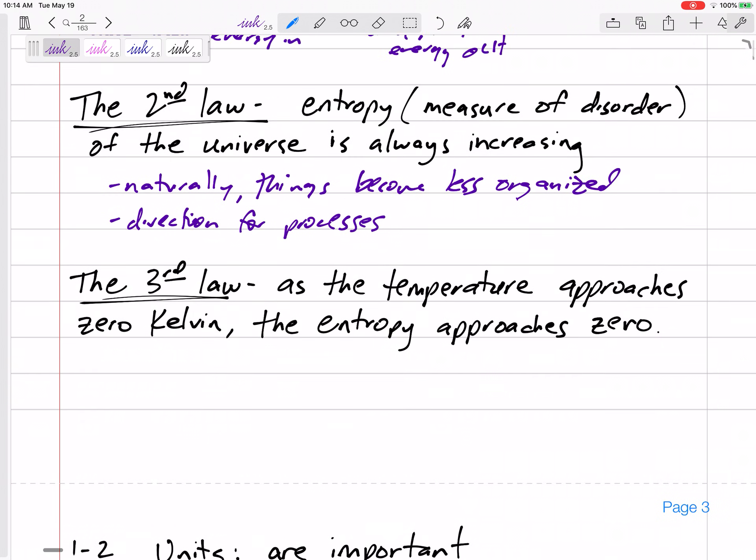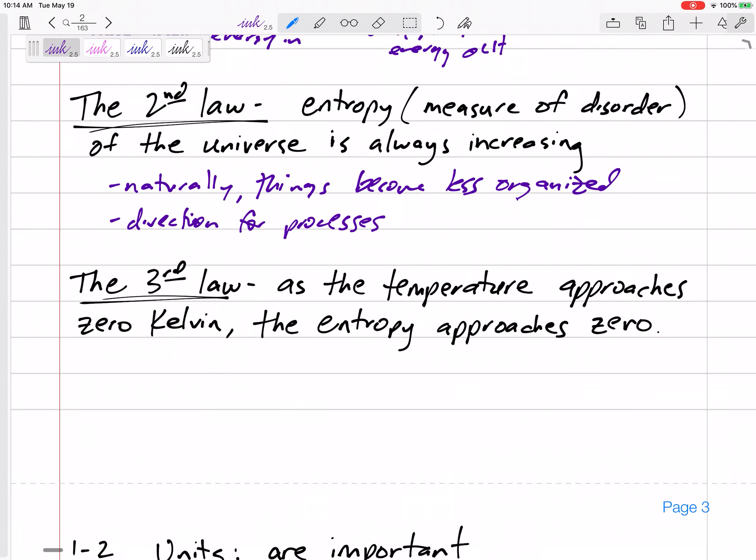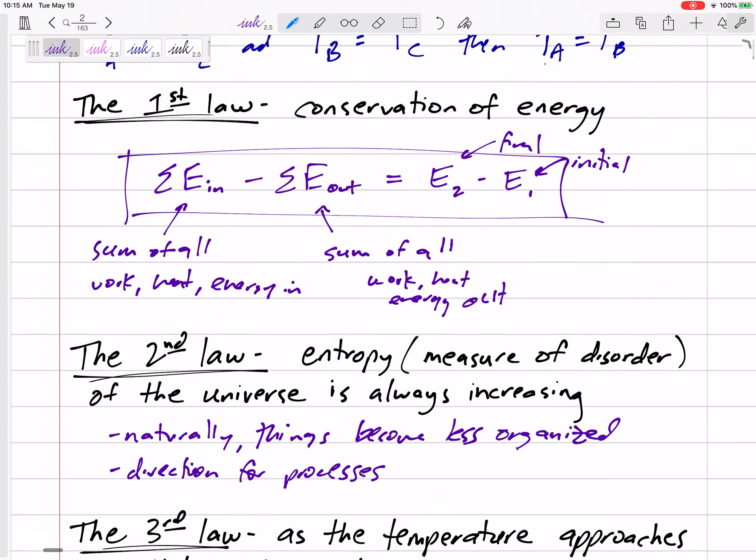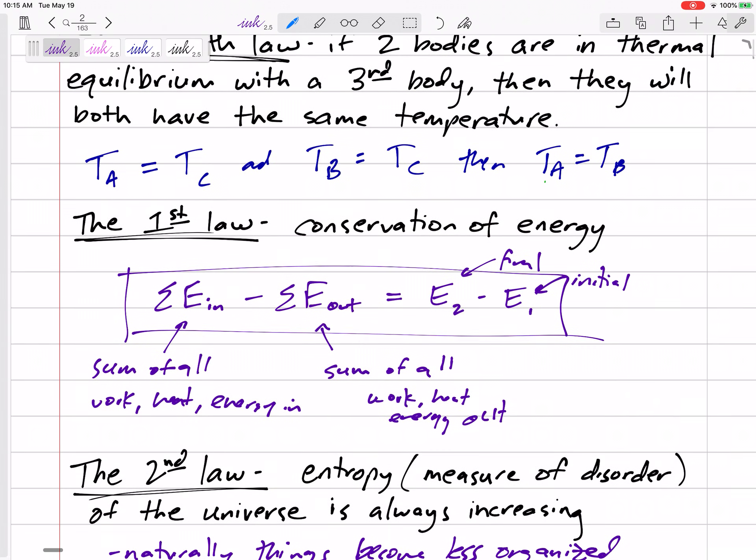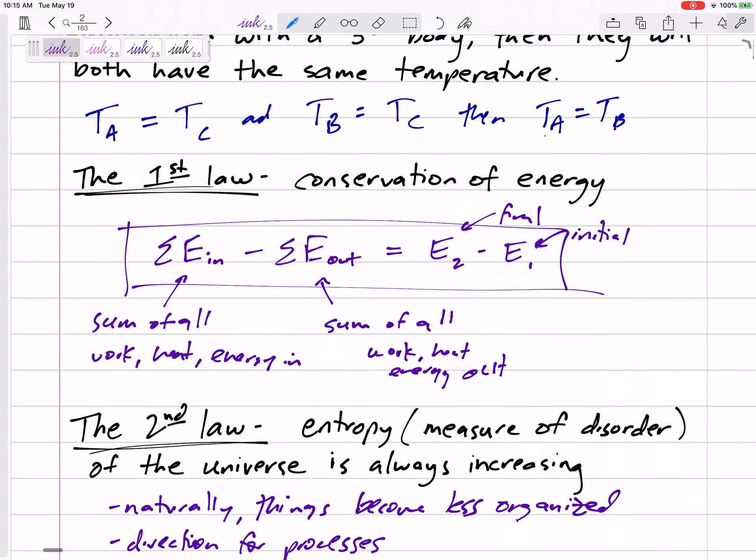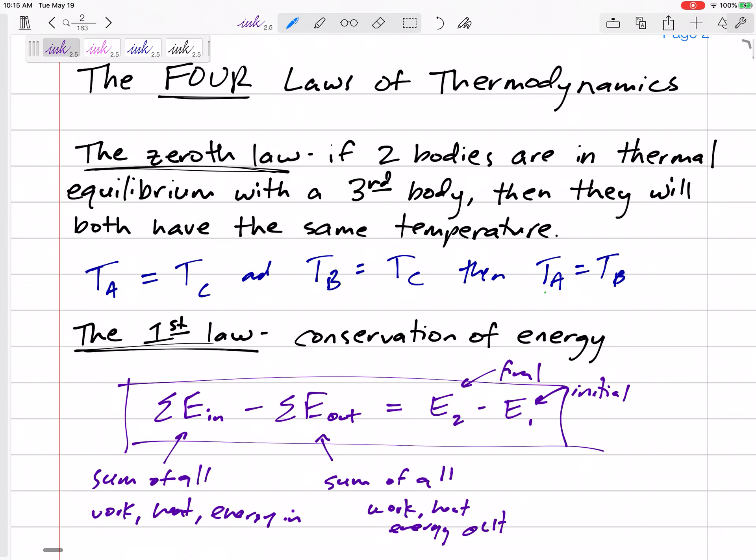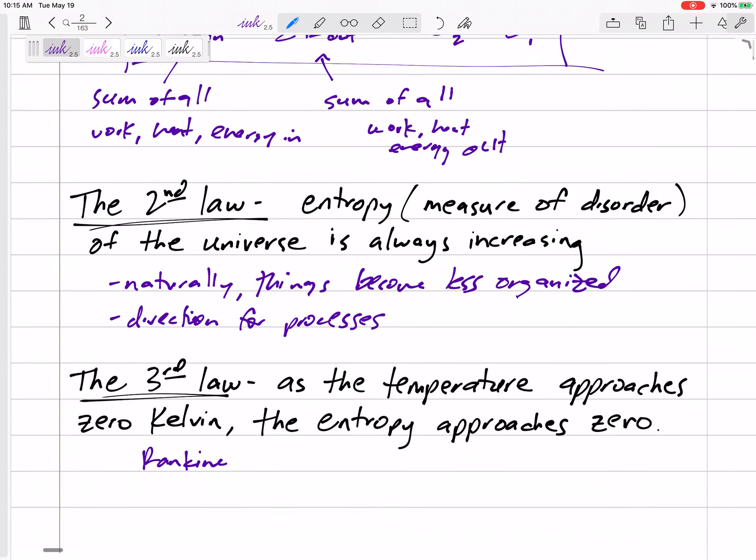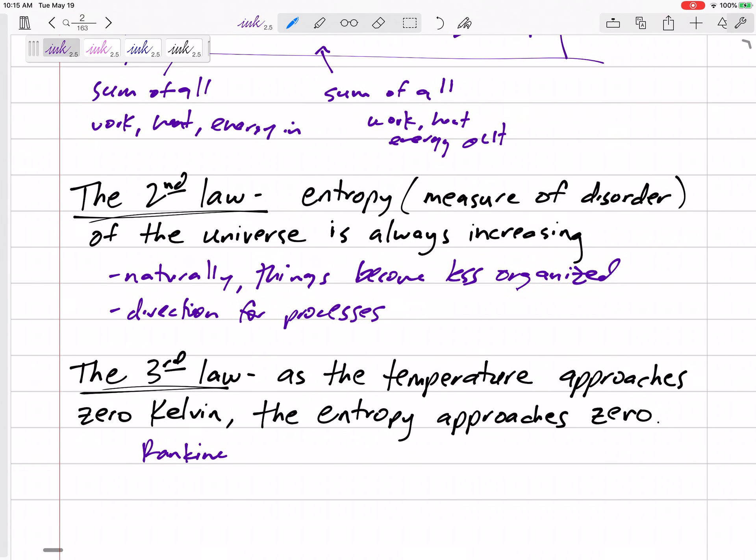The third law is that as temperature approaches zero Kelvin or zero Rankine, Rankine would be the English absolute value temperature scale, entropy approaches zero. We won't deal with those very much. First law is where we're spending the most of our time for this class. This is a foundation for thermodynamics, these four laws of thermodynamics.